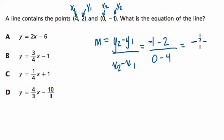So negative 1 minus 2 is negative 3. 0 minus 4 is negative 4, so our slope is negative 3 divided by negative 4, which is positive, and m is 3 fourths.